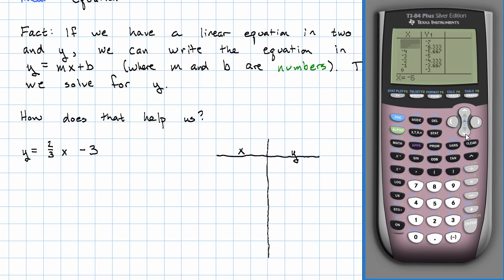I'm going to put that into my calculator and I'm only going to choose to write down x's for which the y is a whole number. So I'm going to take x is negative six, y is negative seven; x is negative three, y is negative five; x is zero, y is negative three.